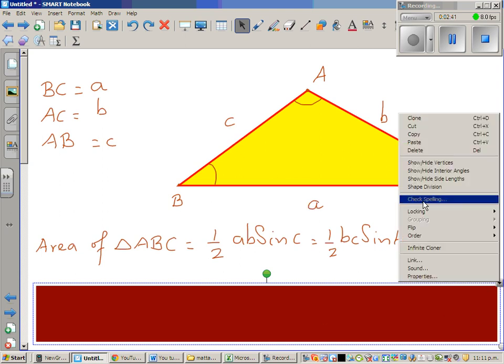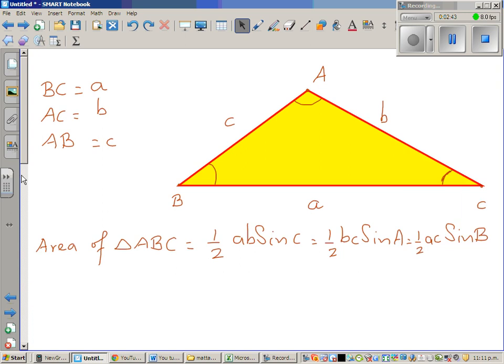It's basically two sides, half times two sides times sine of the angle included between those two sides. So let me prove one of them, you can prove the rest.